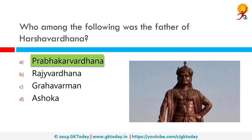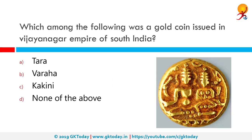Who among the following was the father of Harsha Vardana? The correct answer is Prabhakar Vardana. Prabhakar Vardana was the king of Thanesar in northern India around the time of the decline of the Gupta Empire. According to historian Ramesh Chandra Majumdar, he was the first notable king of the Vardana dynasty but the fourth ruler from the family, also referred to as the Pushyabhutis.